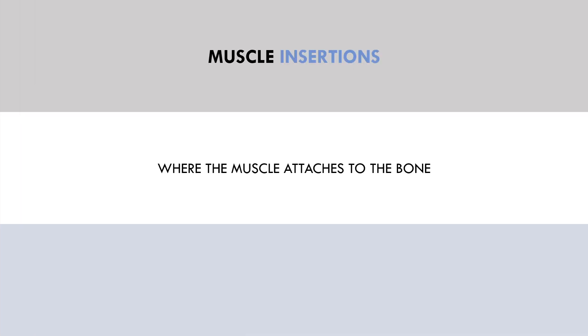The other primary anatomical factor that influences strength is the muscle insertion points. Individuals can have differences in where the muscle attaches onto the bone. While we won't go into the details of how this influences strength, it should be understood that small differences in muscle insertions can have fairly significant influences on strength.